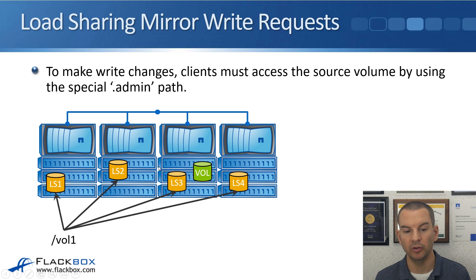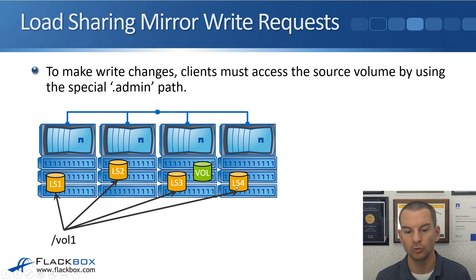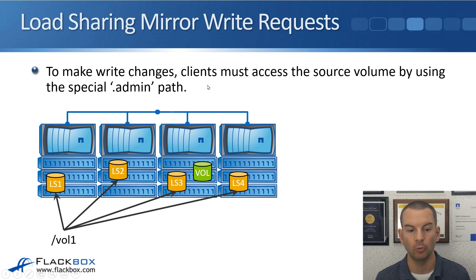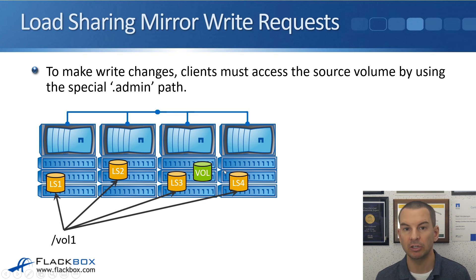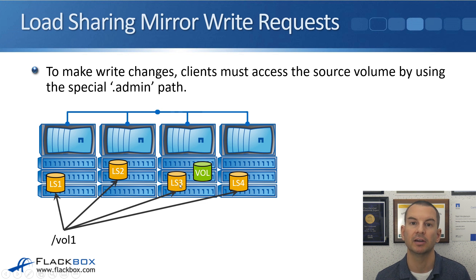If we only created three load-sharing mirrors — say on nodes 2, 3, and 4 — then if a read request came in for vol1 and hit node 1, that would have to be serviced by one of the other nodes over the cluster interconnect. If a read request hits node 3, even though that is where the source volume is, it is still going to be serviced by the load-sharing mirror because it is a read request.